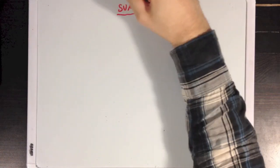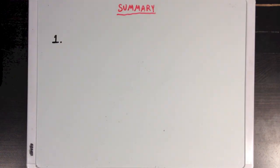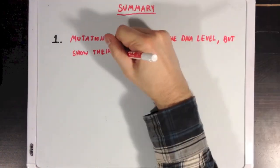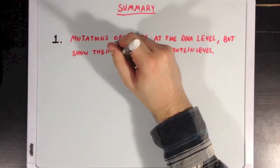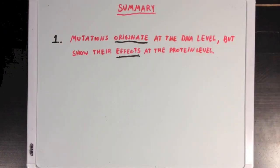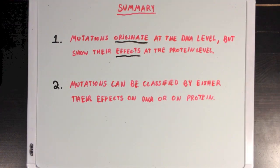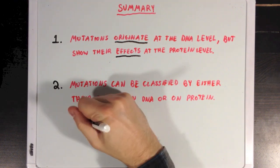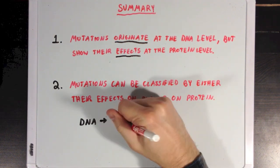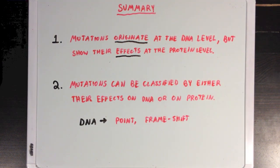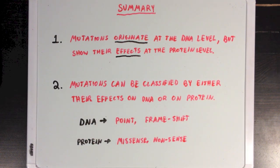So what did we learn? First, we learned that mutations originate at the DNA level but show their effects on the protein level. Second, we learned that we can classify different types of mutations by either their effects on DNA or their effects on protein. In reference to DNA, we have point and frameshift mutations. And in reference to protein, we have missense and nonsense mutations.